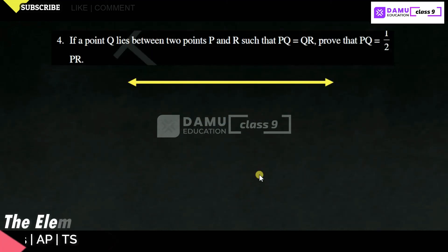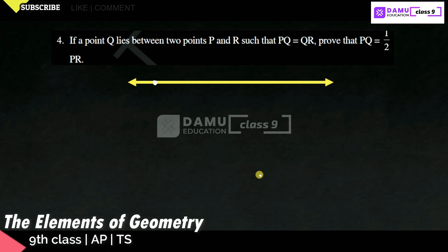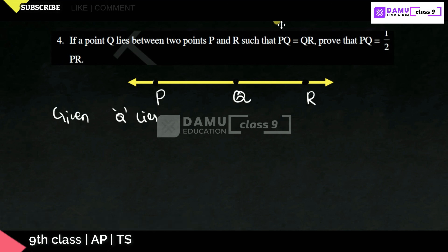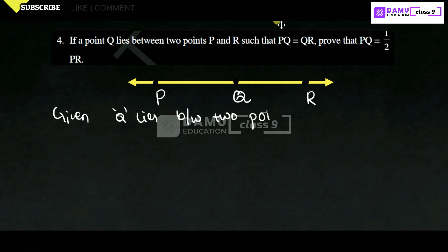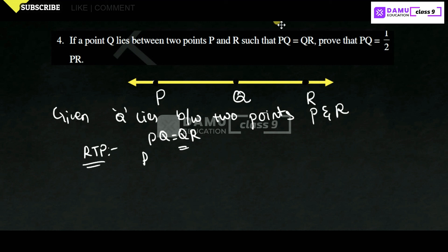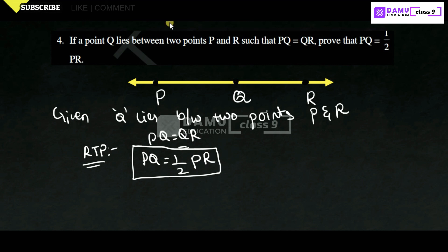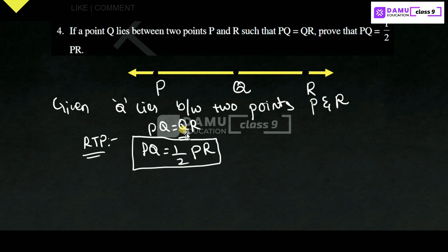Fourth question: if a point Q lies between two points P and R such that PQ equals QR, then prove that PQ equals half of PR. Given: Q lies between P and R, and PQ equals QR. Required to prove (RTP): PQ equals one-half of PR. Now, PR is the whole part and its two parts are PQ and QR.